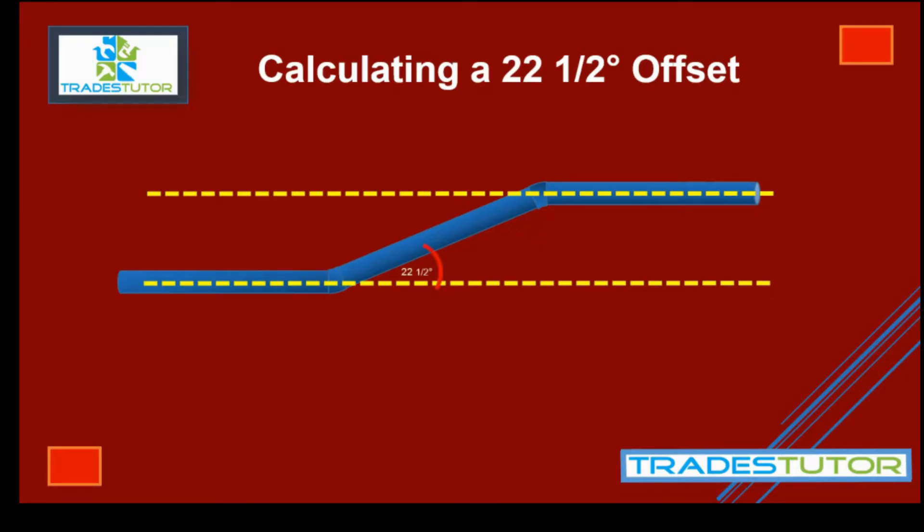And then the two angles. So it offsets by a 22 and a half on that side. And if you were to put an angle from the upper horizontal line, you'd also get a 22 and a half degree.